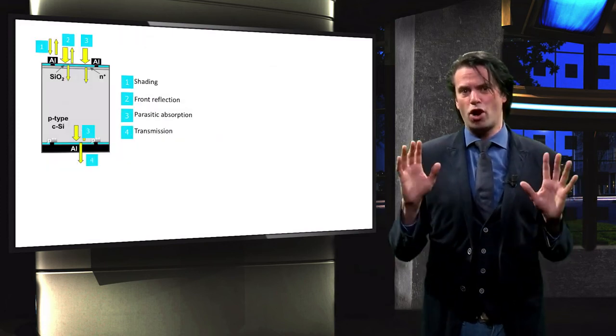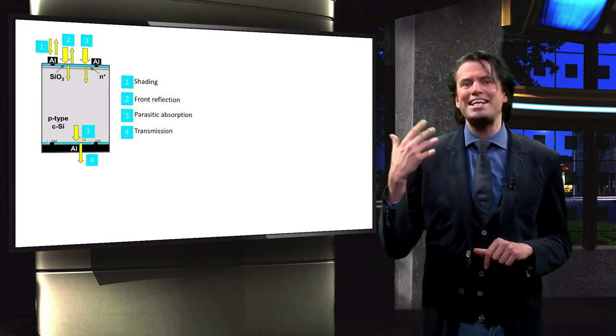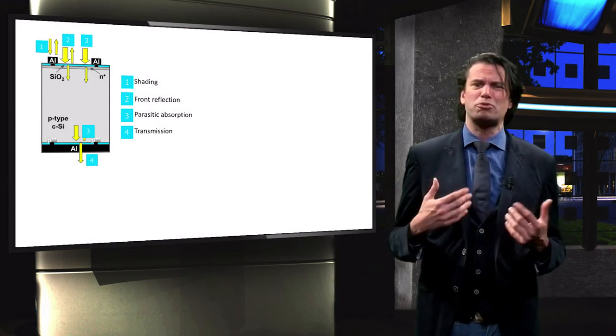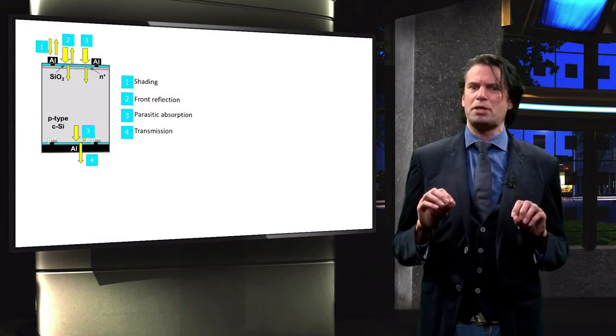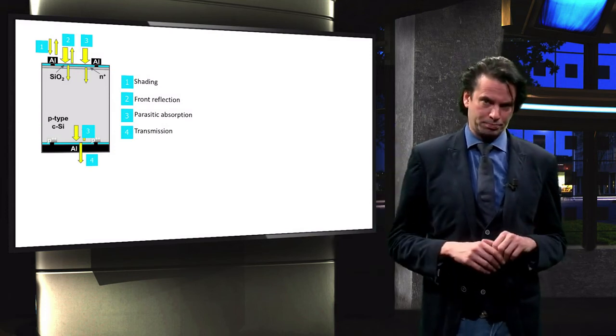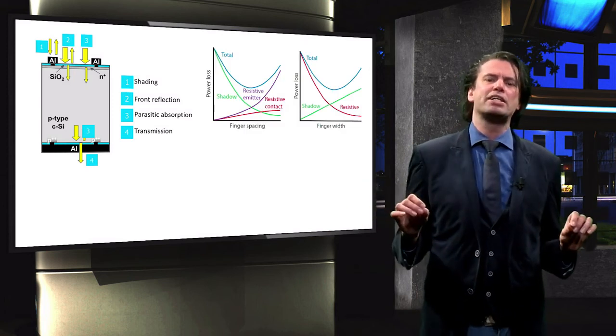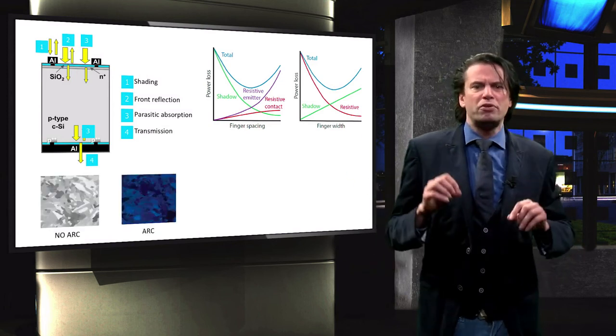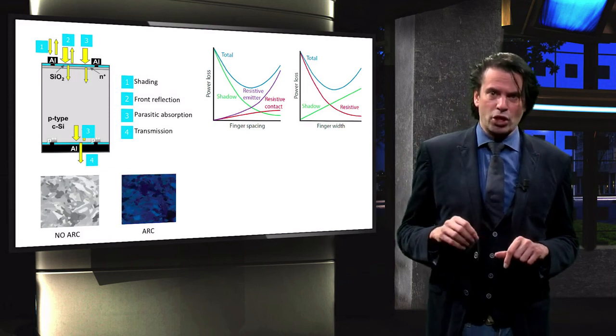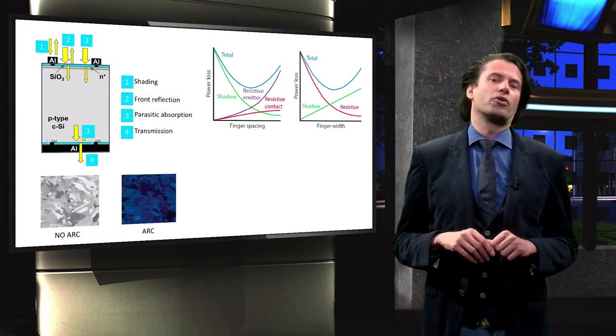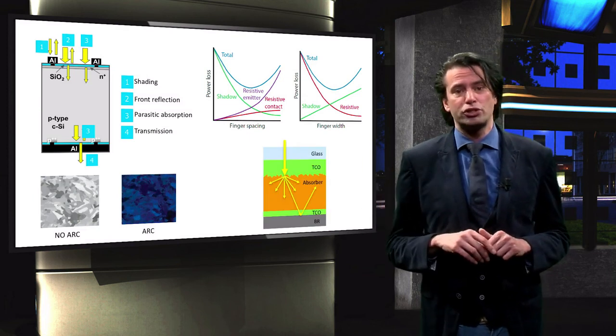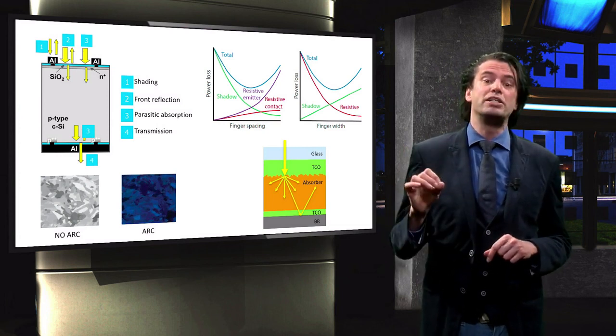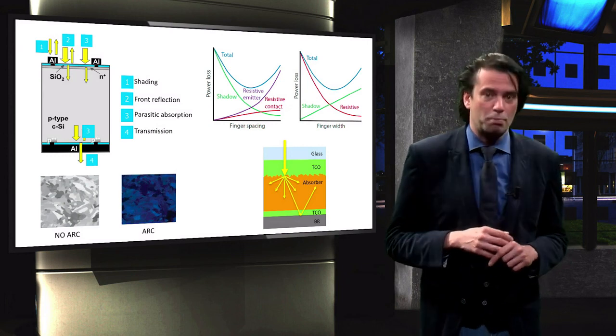Time for a recap of our optical loss mechanisms. We saw how any solar cell exhibits losses due to shading, reflection of the front surface, parasitic absorption, and transmission. And we discussed the basic concepts involved in remedying these losses. The shading losses should be minimized by cleverly designing the spacing and width of the fingers. The front reflection should be remedied by an anti-reflection coating, which we will discuss in more details in the following sections. Finally, the light transmission from the solar cell should be mitigated by increasing the path length of light through the solar cell. This will also be discussed thoroughly in the next couple of sections.